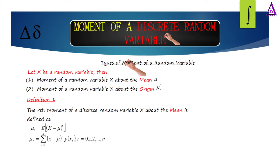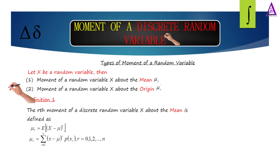Types of moment of a discrete random variable. Let x be a random variable. The first type is the moment of a random variable x about the mean, denoted mu subscript r. The second is the moment of a random variable x about the origin, denoted mu subscript r prime.